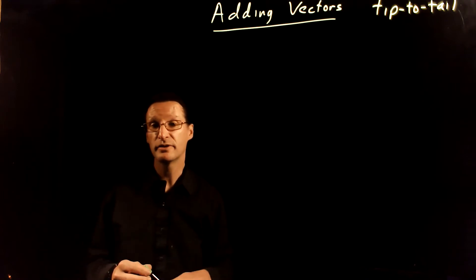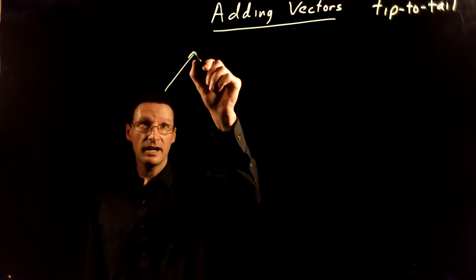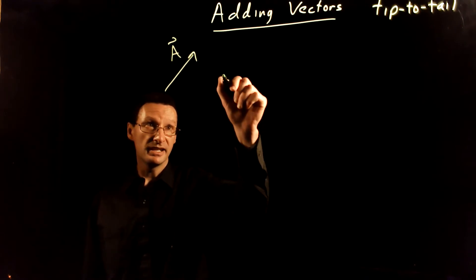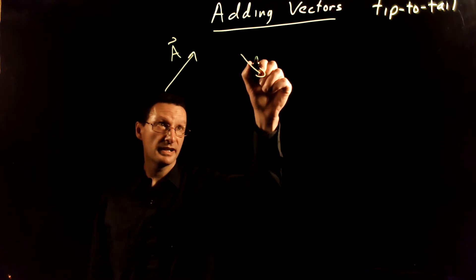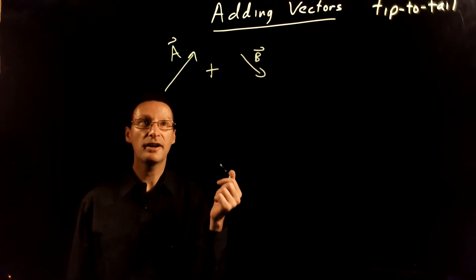We're going to talk about how to do this with the tip-to-tail method right now. So let's say you have two vectors, A and B. Let's make B point like this. And we want to add these two together. So how do you do this?